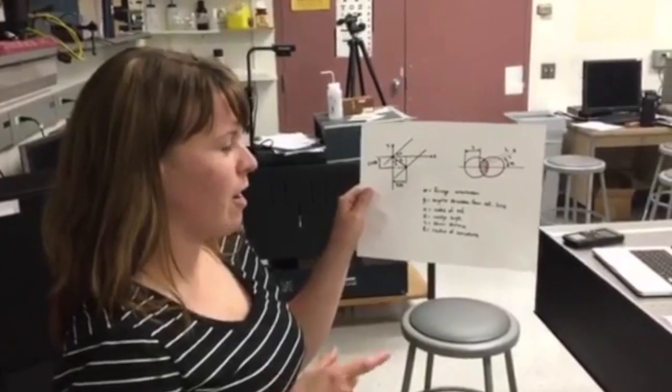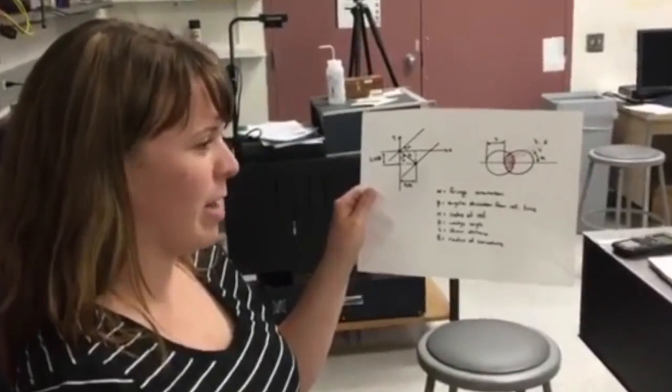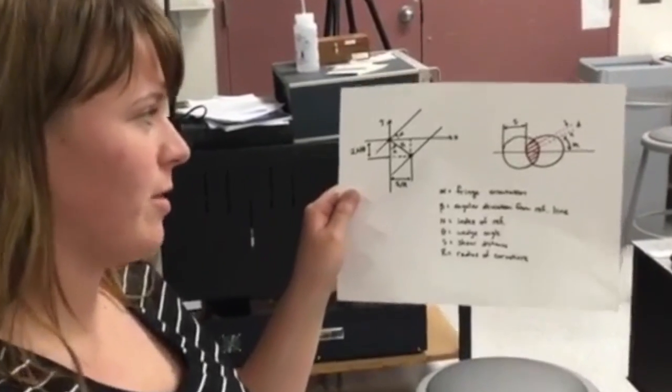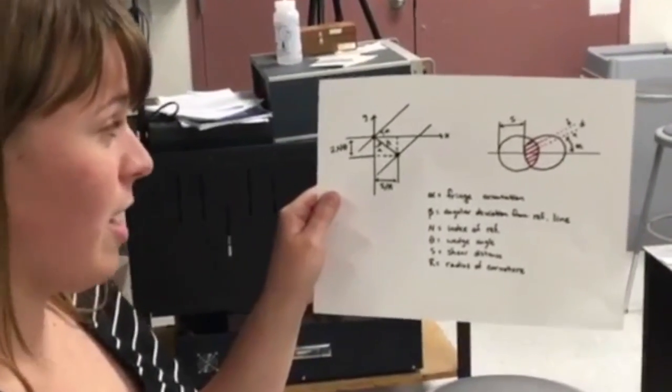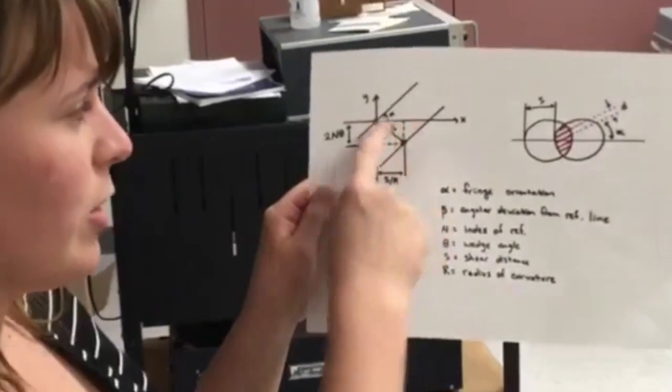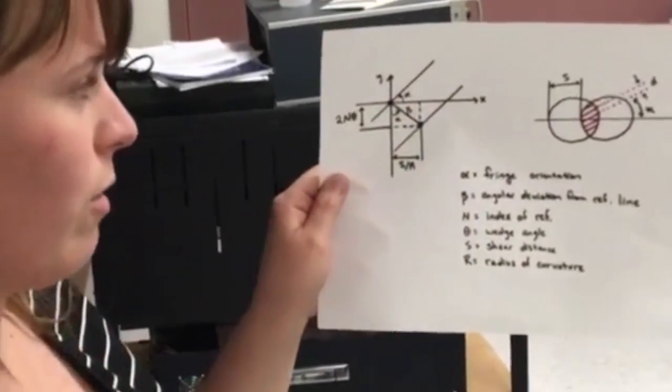Next we added a shear plate after our beam expander to check for collimation. You can have a shear plate that is wedged or a shear plate that is not wedged. With a shear plate that is not wedged, you would only have a separation between two points of light in the x direction, meaning that you'd only see vertical fringes.